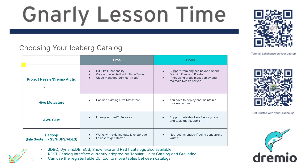There are also many other catalog choices. The JDBC catalog means anything that supports a JDBC connection can pretty much be used as a catalog — any database — and it'll just create a table that tracks your tables. There's a DynamoDB catalog, an ECS catalog if you're working with Dell ECS, and there's a Snowflake catalog now that Snowflake has released their iceberg features.